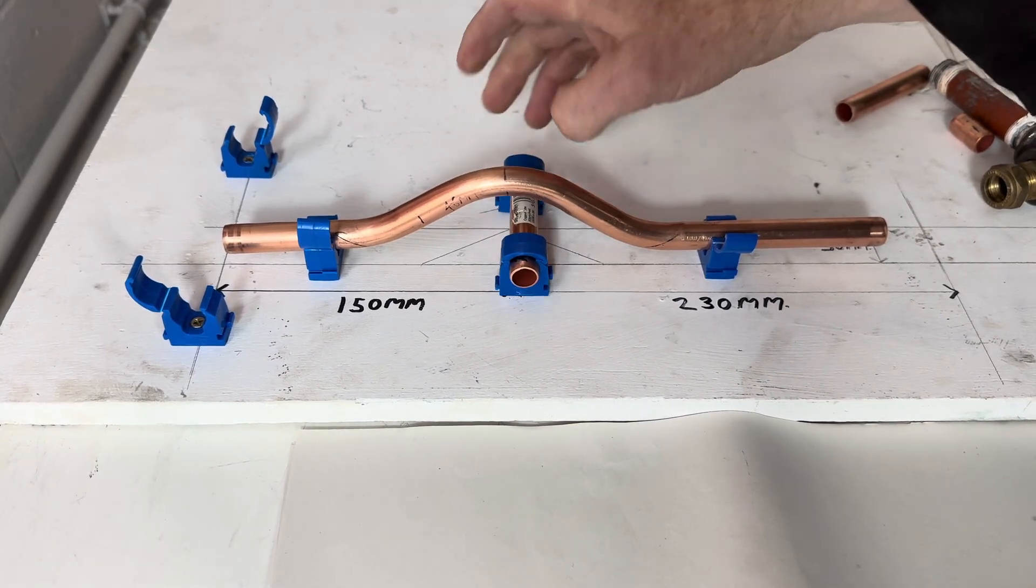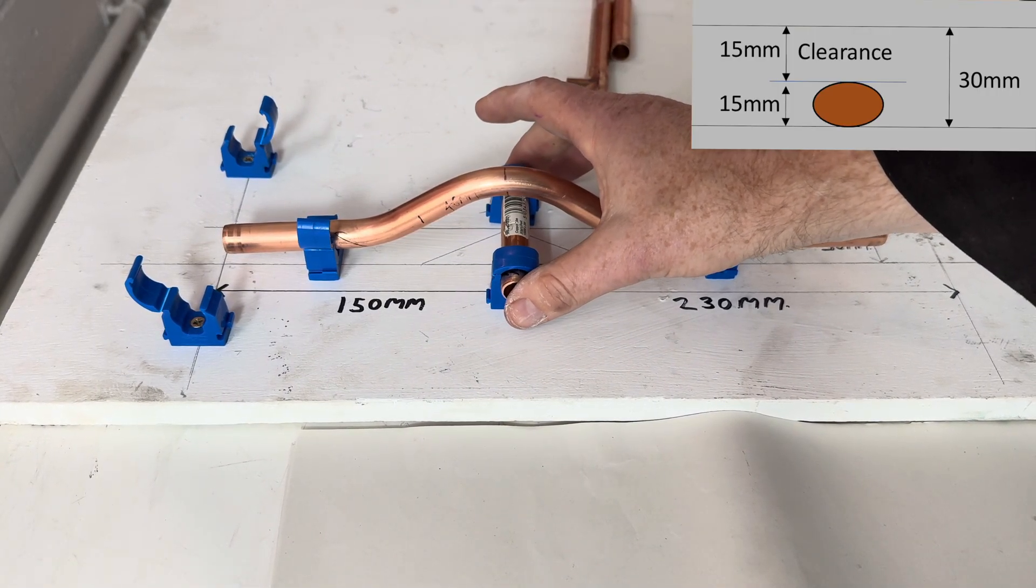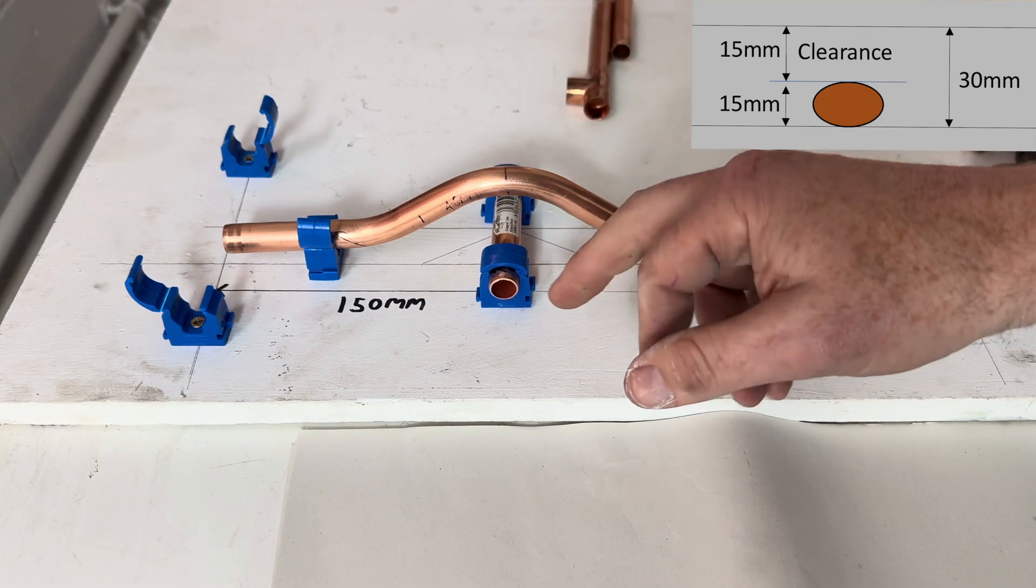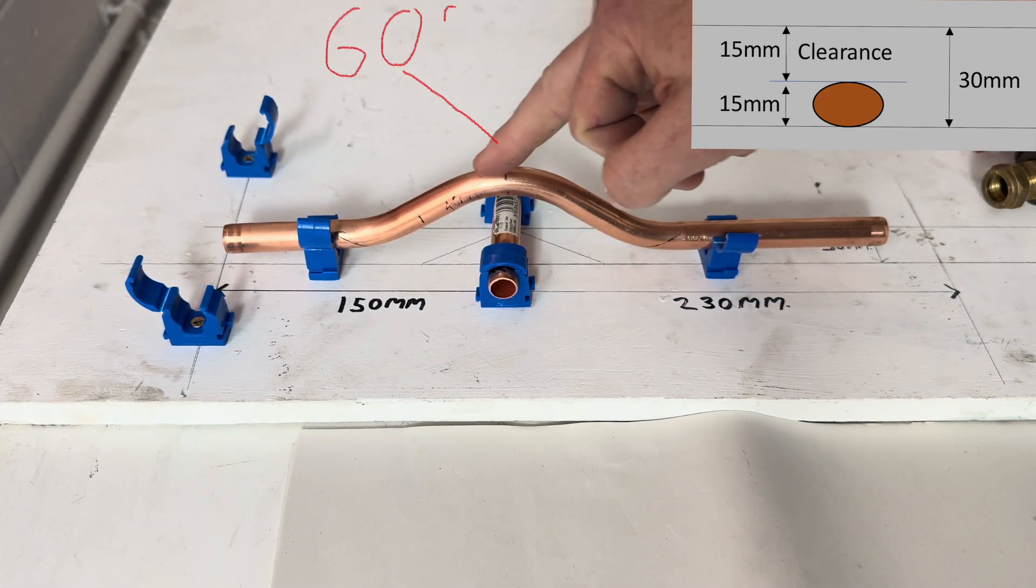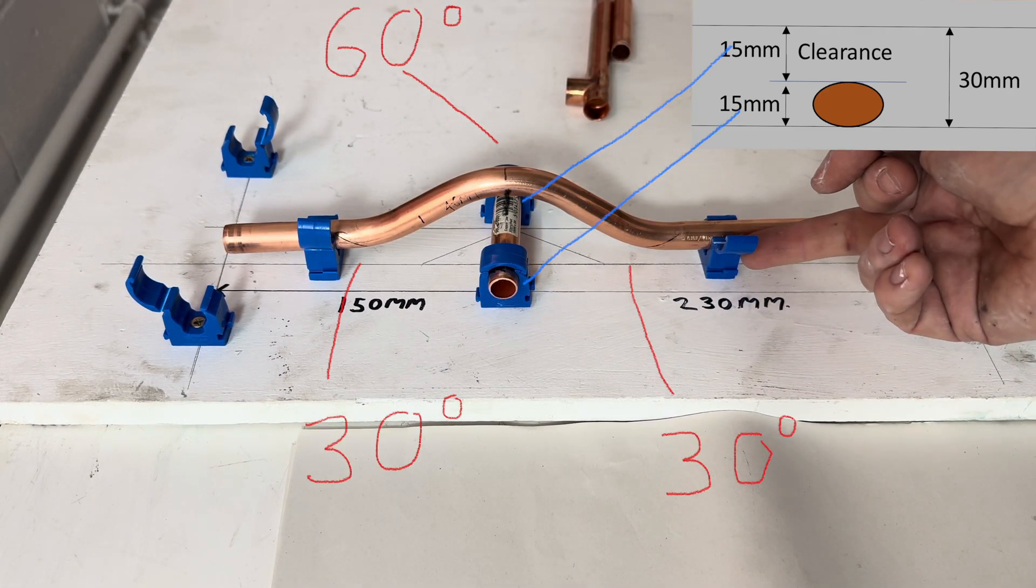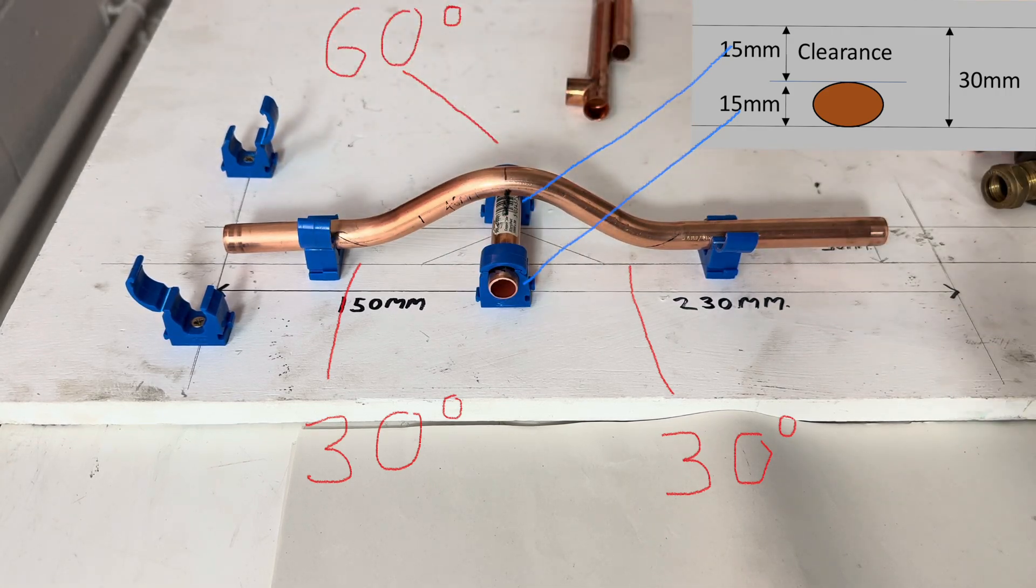So the Passover bend consists of three bends: a 60 degree bend which we do first, then a 30 degree bend and a 30 degree bend.